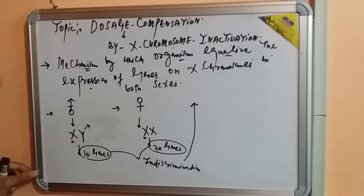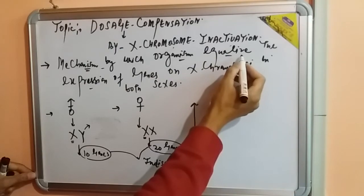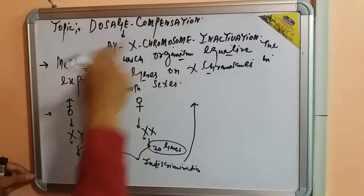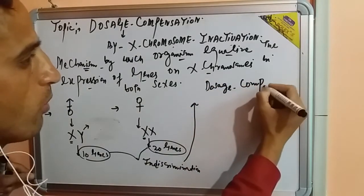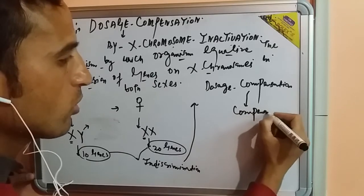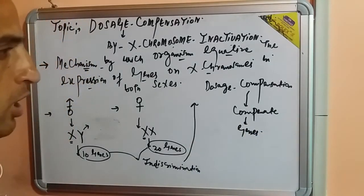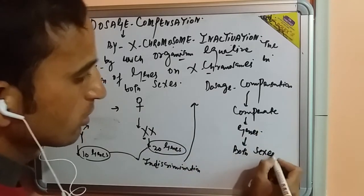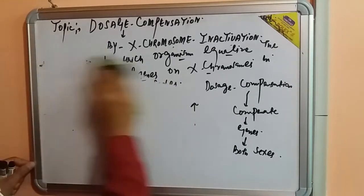Dosage compensation is a mechanism by which organisms equalize the expression of genes on sex chromosomes in both the male and the female. If you focus on the term, it means we have to compensate the doses — the amount of genes — present in both sexes. The mechanism by which this dosage compensation is achieved is called X chromosome inactivation.